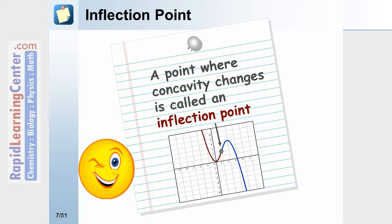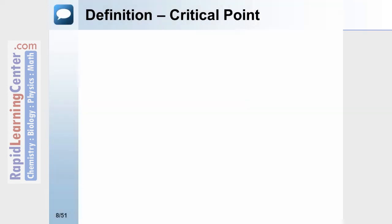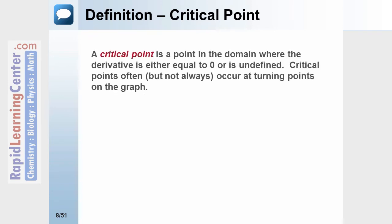An inflection point is a point on the graph where the concavity changes. In the example we just completed, the inflection point would have occurred at x = 1. Let's take a look at the definition of a critical point.